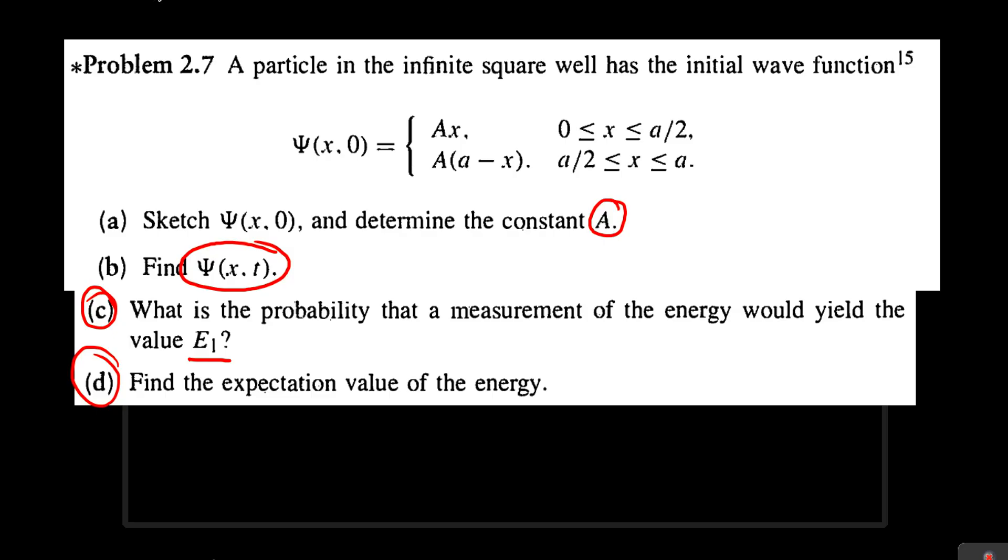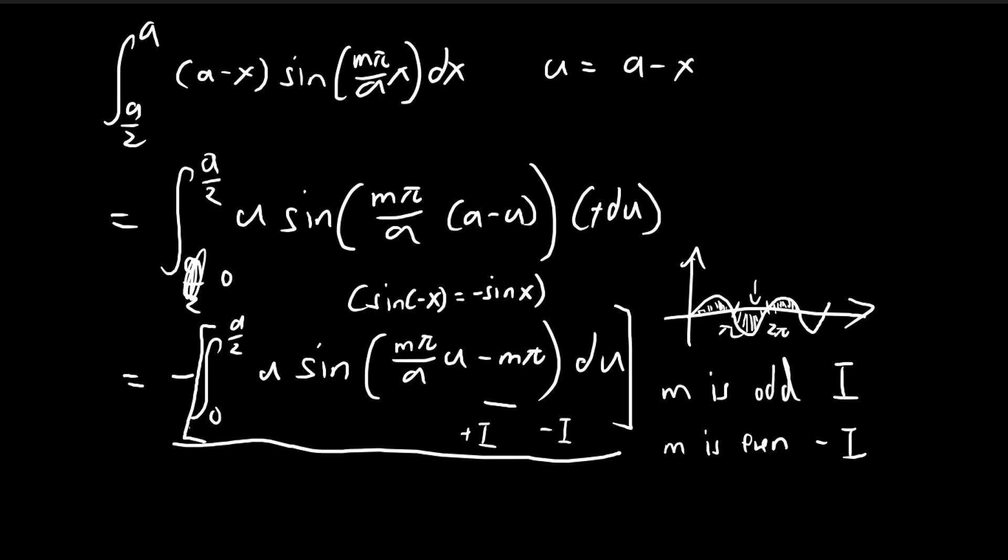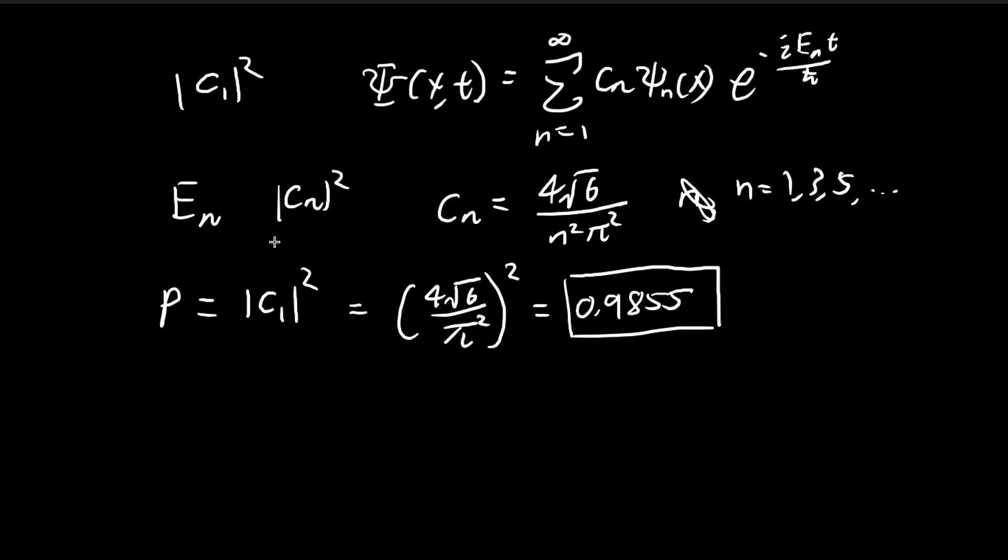So going back to part d, now we need to find the expected value of energy. So finding the expected value, the idea is pretty similar to what we just did. We're going to use these constants. So the probability of getting the nth stationary state is equal to cn squared. So the expected value is simply multiplying the probability by the nth energy level.